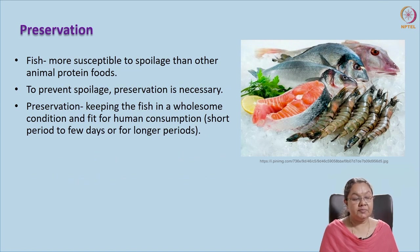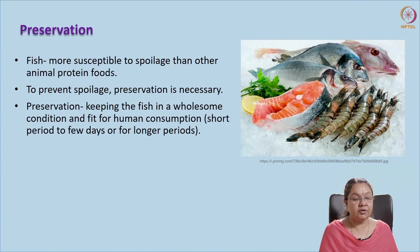Fish is more susceptible to spoilage than any other animal protein foods. Compared to terrestrial animals, fish is more susceptible to spoilage because of its distribution of components and muscular texture. To prevent spoilage, preservation is the most important methodology. We have to adopt suitable preservative methods to increase the shelf life, and it is unavoidable in the case of fish or any animal product rich in proteins — without employing preservation techniques it is very difficult to extend shelf life or maintain nutritional quality.